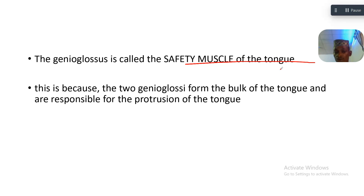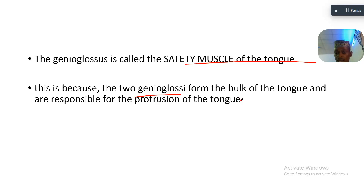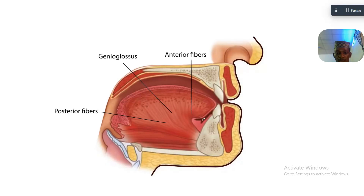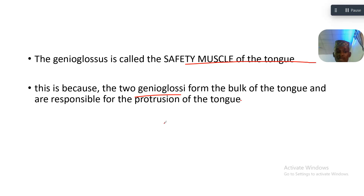This is because the two genioglossi form the bulk of the tongue. They are paired, and they form the bulk of the tongue.